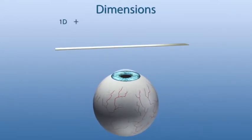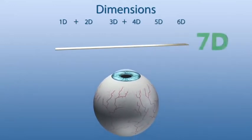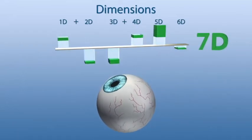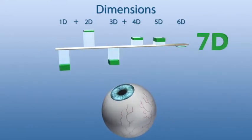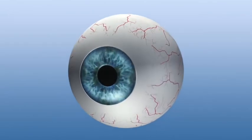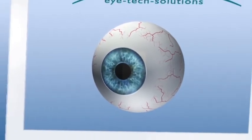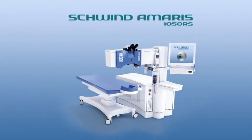This procedure enables a latency-free ablation process and even more safety for the patient. The 7D Schwind Amaris 1050 RS is the only available excimer laser system providing eye tracking in space and time.